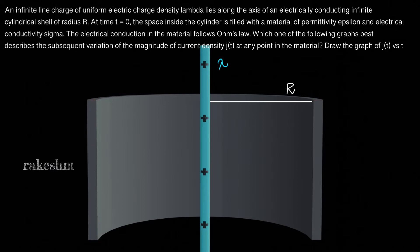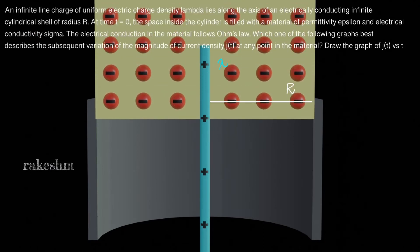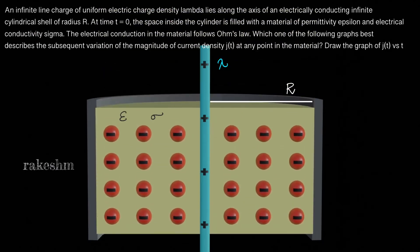I have cut it and drawn it so you can see what is inside. At time t equals zero, the space inside the cylinder is filled with a material of permittivity epsilon and electrical conductivity sigma. So the space in between is filled with this material of permittivity epsilon and conductivity sigma.